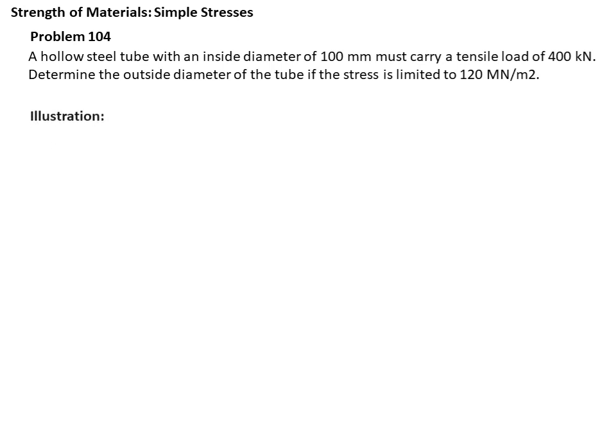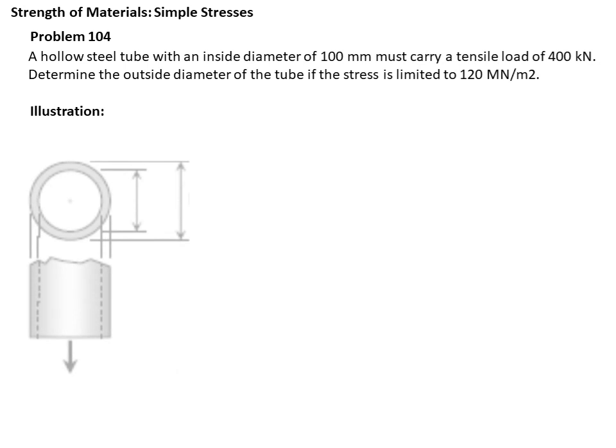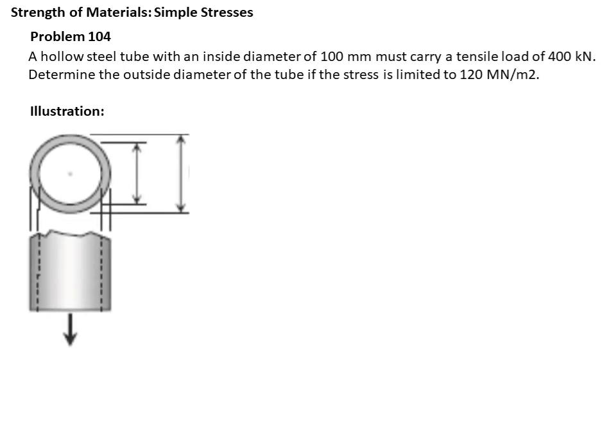So let's do the illustration. From the problem, this is the hollow steel tube and this upper part is the cross-sectional area. Let's write down the given. The force P is equal to 400 kilonewtons or equivalent to 400,000 newtons. In our illustration, we'll put it in the arrow below. It is away from the material since, as per our problem, it is a tensile load.